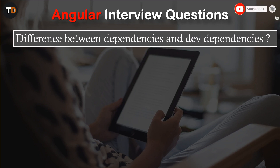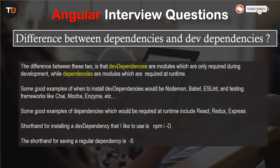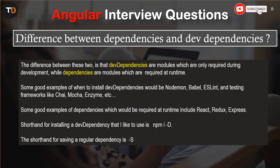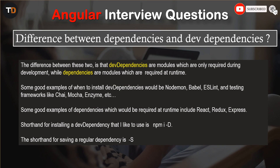The difference between dependencies and dev dependencies is that dev dependencies are modules which are only required during development mode, while dependencies are modules which are required at runtime. Some good examples of when to install dev dependencies would be nodemon, babel,